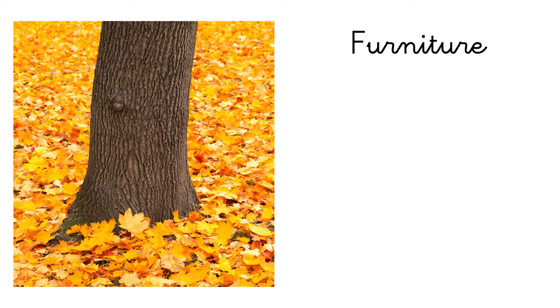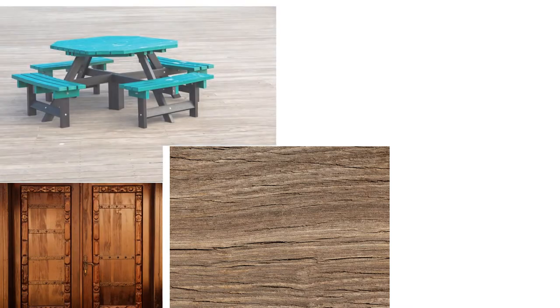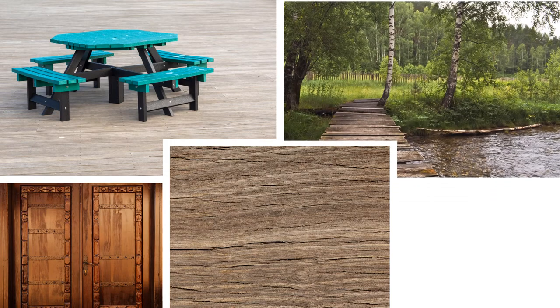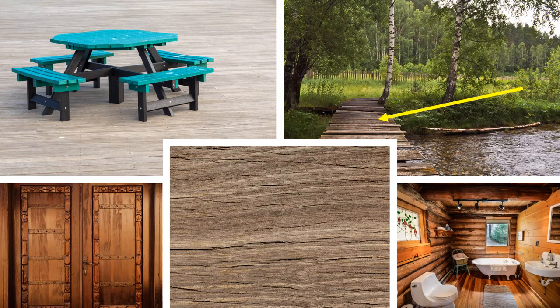For example, we can use the stem of a tree to make wood. And with this wood we can make furniture. Some examples of furniture made with wood are doors, tables and benches, bridges and houses.